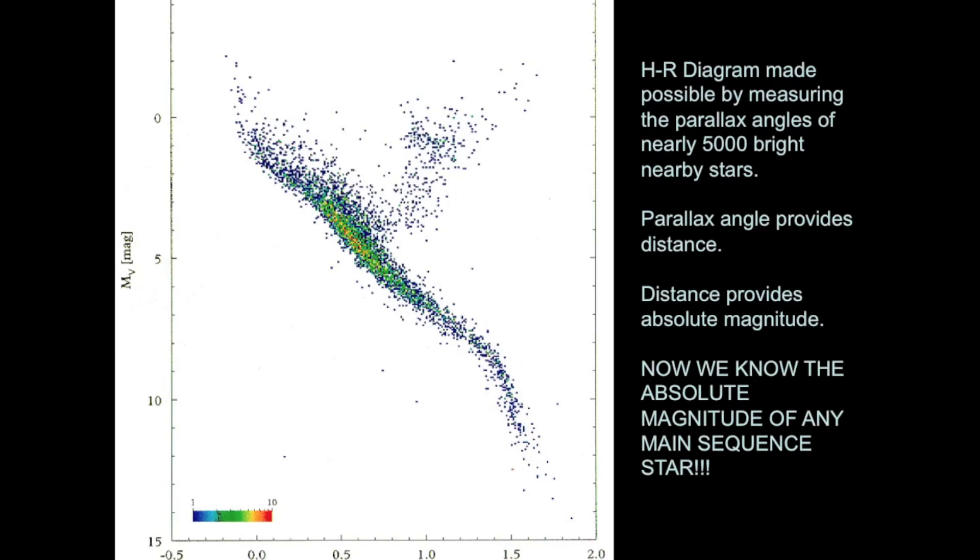In concert with the apparent magnitude, if you know apparent magnitude and you know distance, then you can figure out the absolute magnitude and thus the luminosity of the star. So now that we've calibrated this, now that we know the absolute magnitude of any main sequence star, all we have to do is find them whether or not they're closer or farther than a thousand parsecs and we can determine their distance.